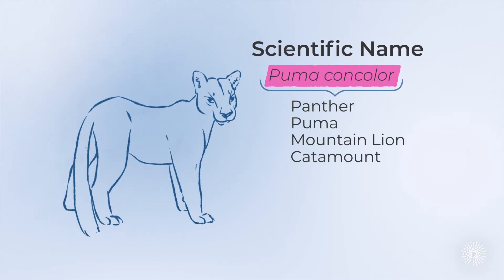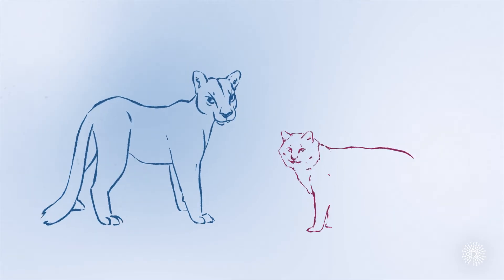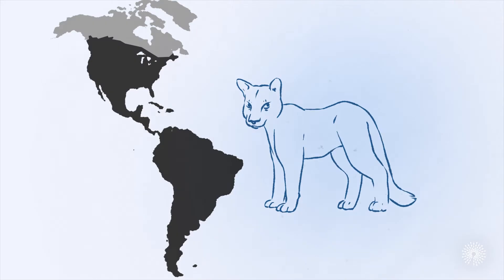catamount, cougar, kukakuanara, yaguati, and at least 40 others, but not bobcat. Part of the reason puma concolor has so many common names is that its vast historical range overlapped with many different indigenous and settler communities.